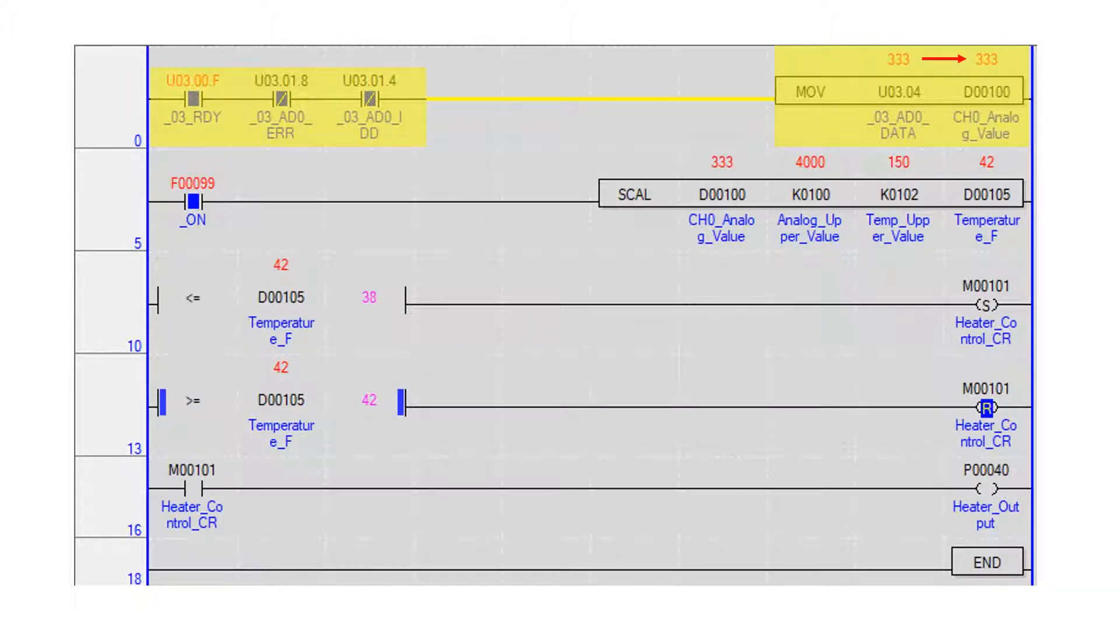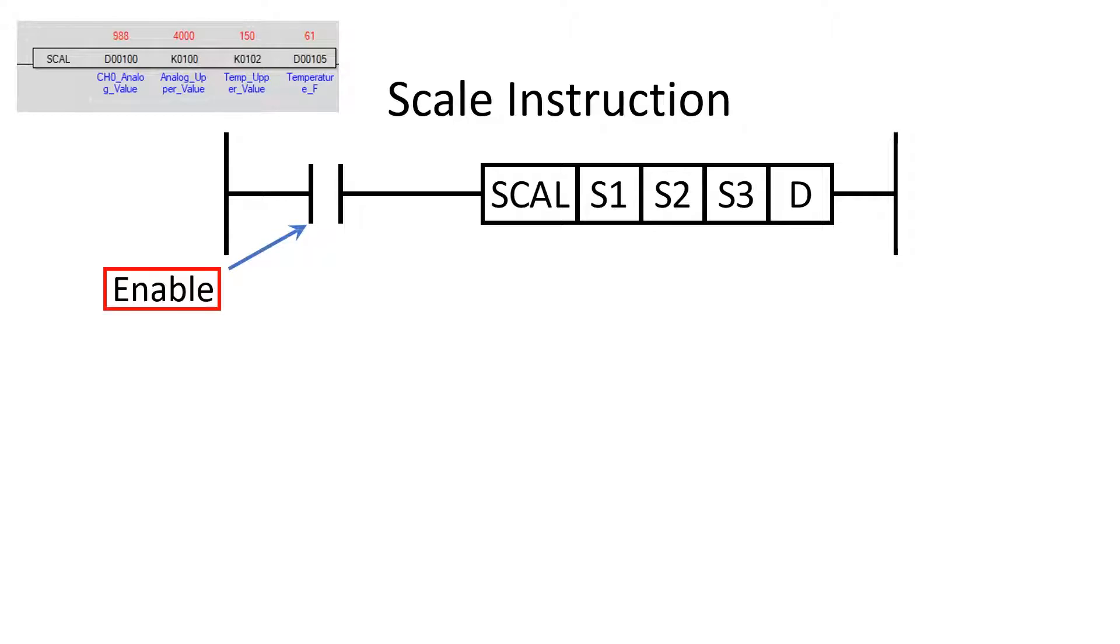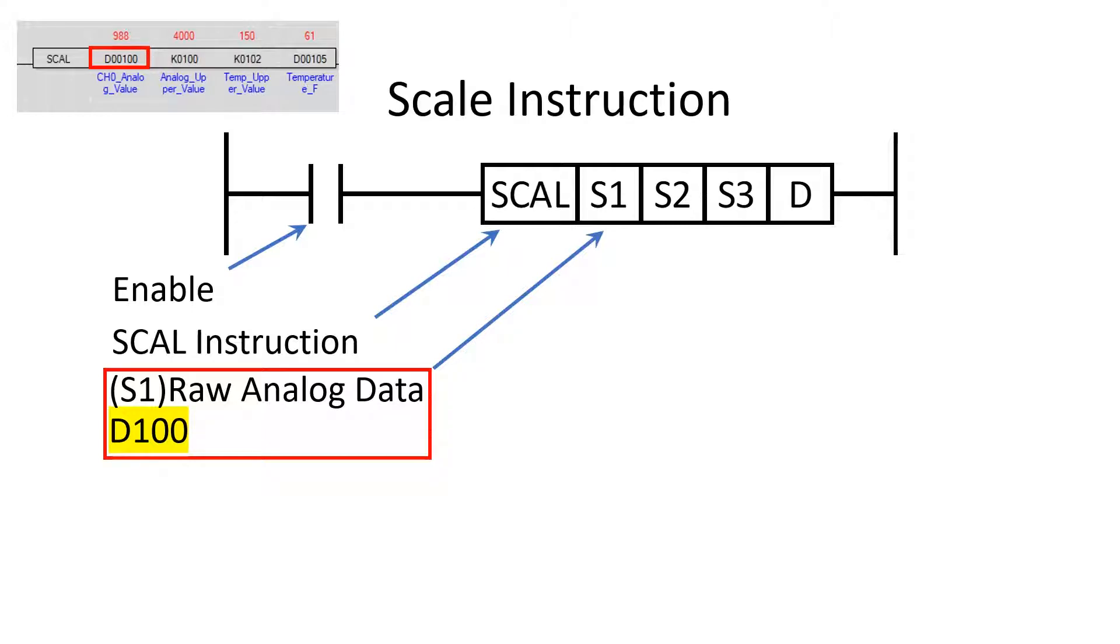In this example, the always on bit in the PLC enables the scale instruction. An enable condition is required when using the scale instruction. This program uses the SCAL instruction. Operand S1 stores the raw analog data. In this program, it is D100.